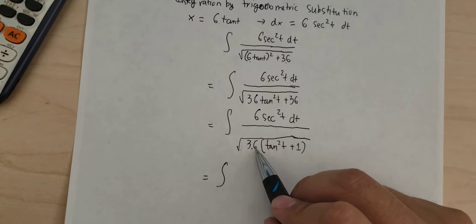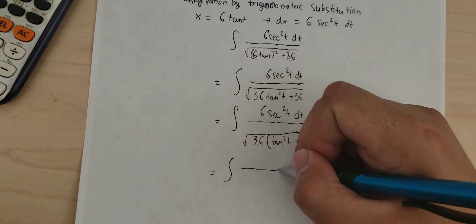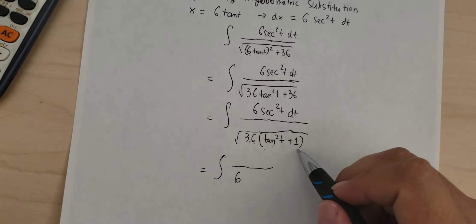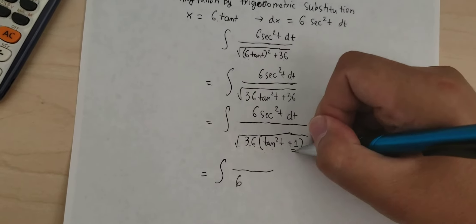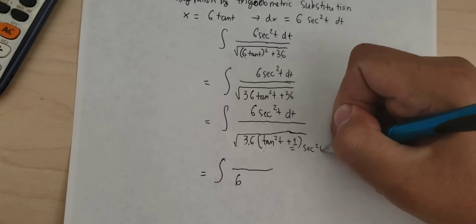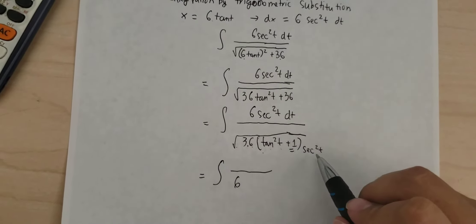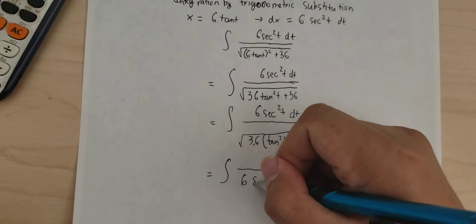The square root of 36 is 6. Tan squared t plus 1 we change for secant squared t. The square root of secant squared t gives us secant of t.